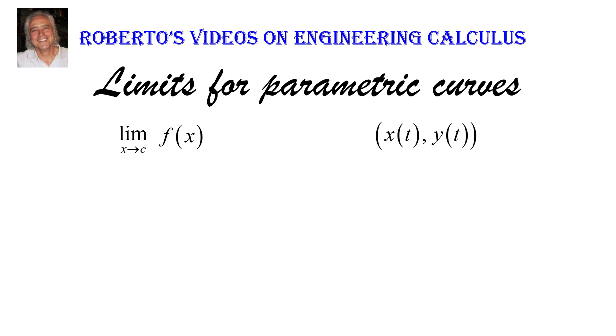The same question could be asked for parametric curves. If we have a parametric curve and there is some value of t for which something interesting seems to be happening to the curve, can we compute something like the limit as t approaches c of that parametric curve? But what exactly would that mean?